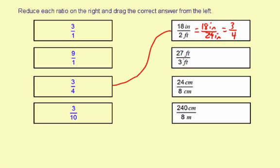This next one, 27 feet to 3 feet, the units are the same, so we just go ahead and reduce. This reduces by 3. It's going to be 9 to 1, and the feet reduce out.